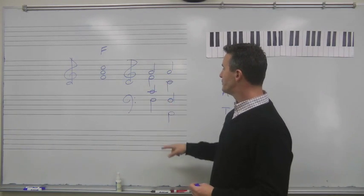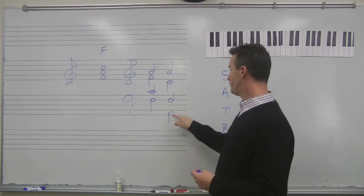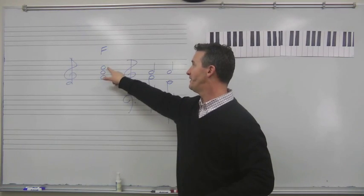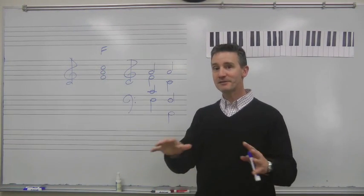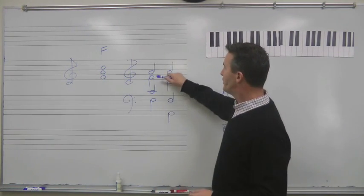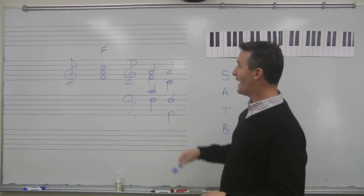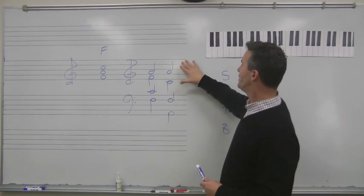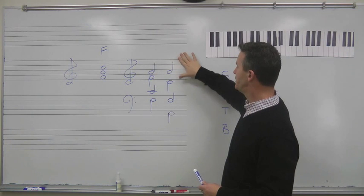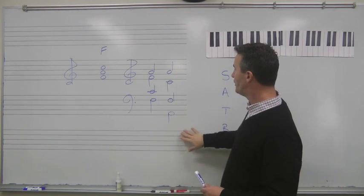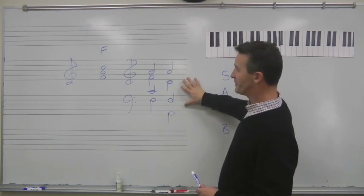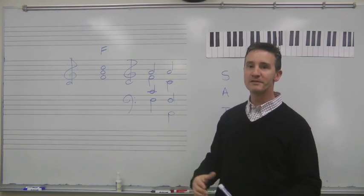Some of those triads will have the root in the bass. Some of them will have the third in the bass. Some of them might have the fifth of the chord in the bass. That doesn't matter. Experiment with how you'll spread the voices out as well. Perhaps some of them will have some sopranos up higher. Some of them will have the basses down lower. Some of them may have more of a gap between the alto and the tenor. Just try writing them in four parts.